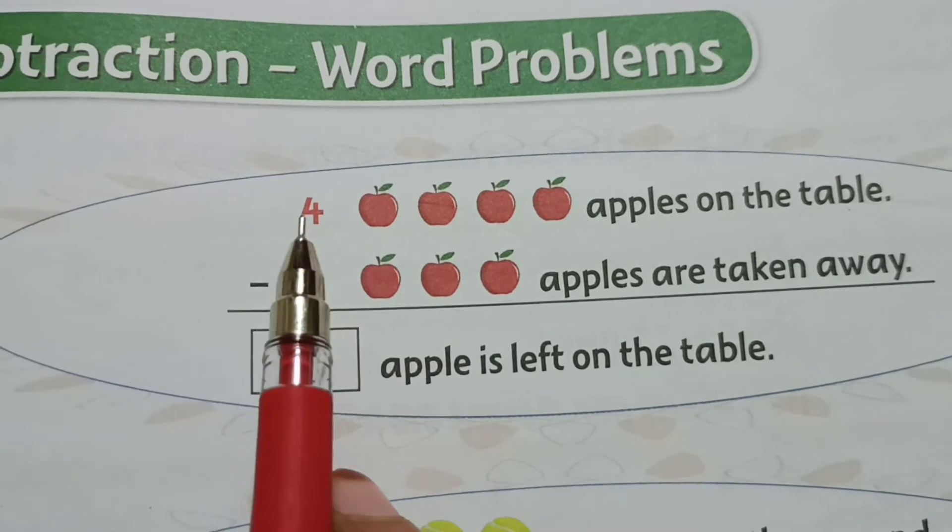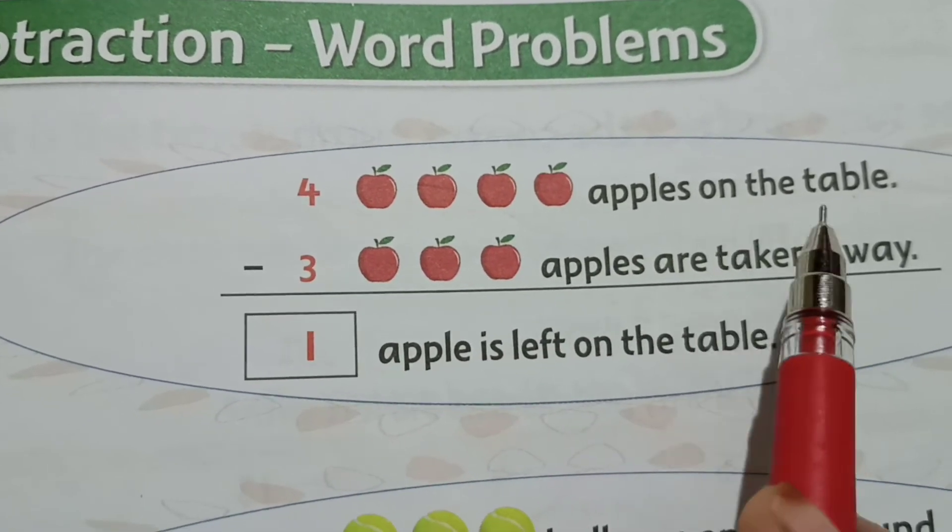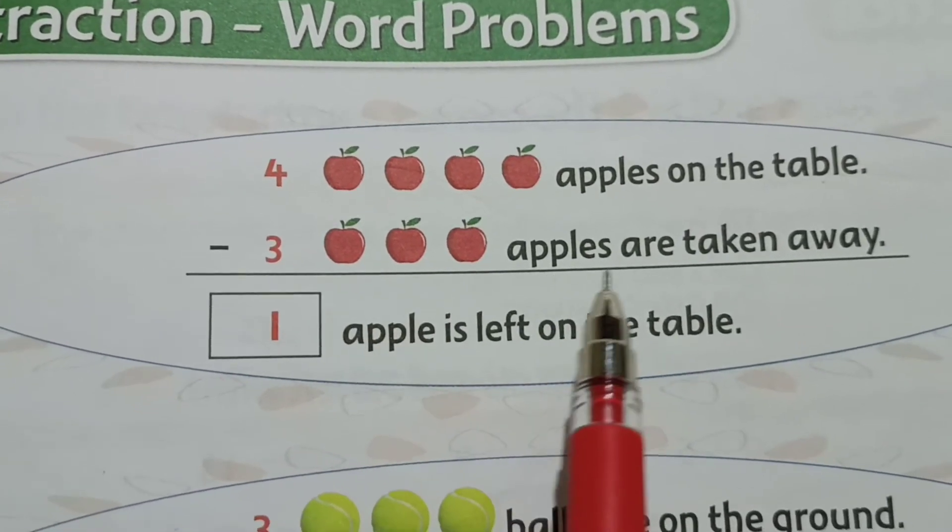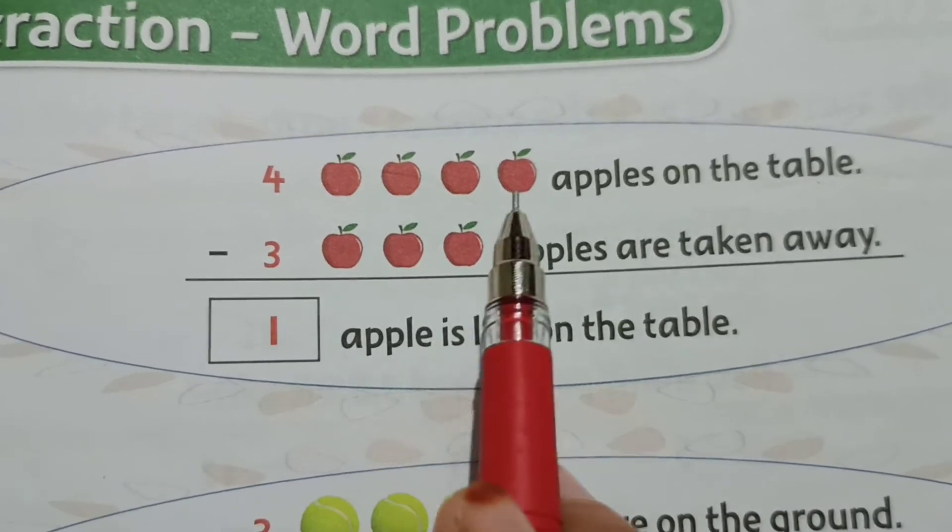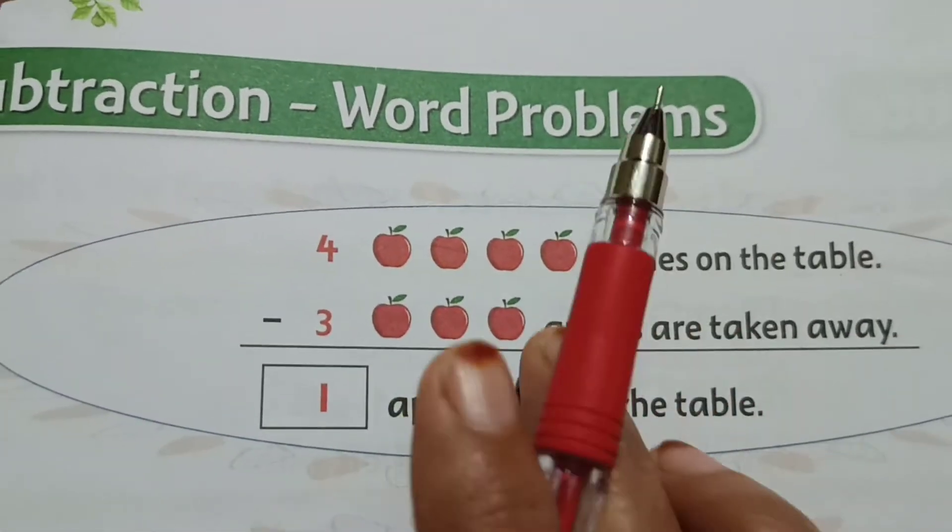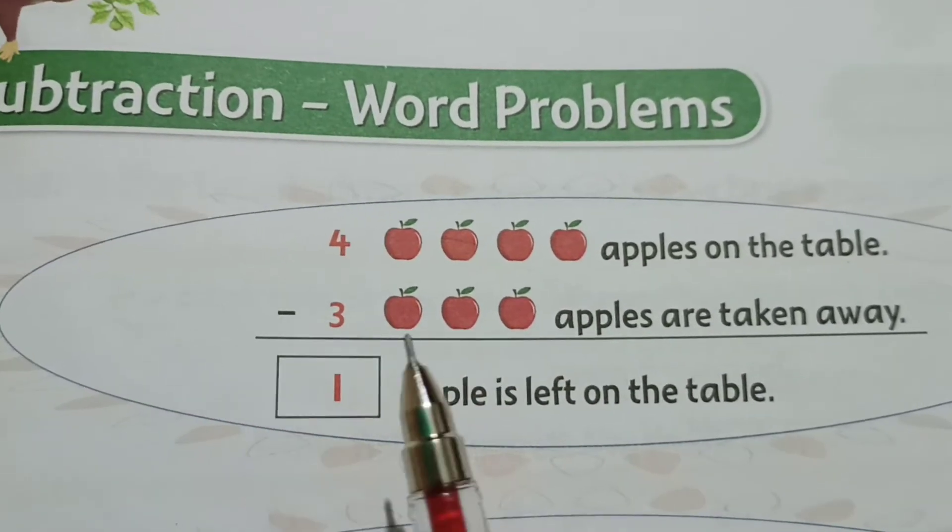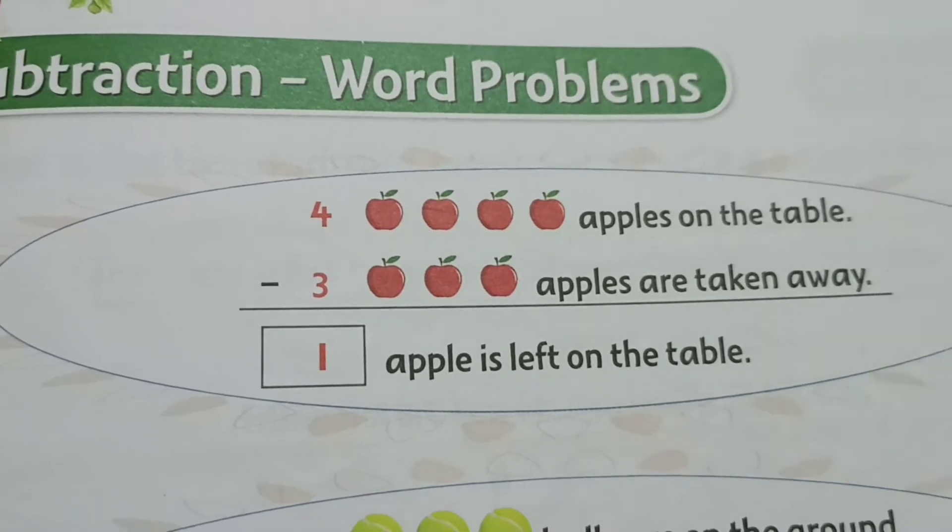Apples are there: 1, 2, 3, 4 apples on the table. 1, 2, 3, 3 apples are taken away. From 4, 3 apples will be cut. 1, 2, and 3. So how many remains here? Answer: 1. So 1 apple is left on the table.